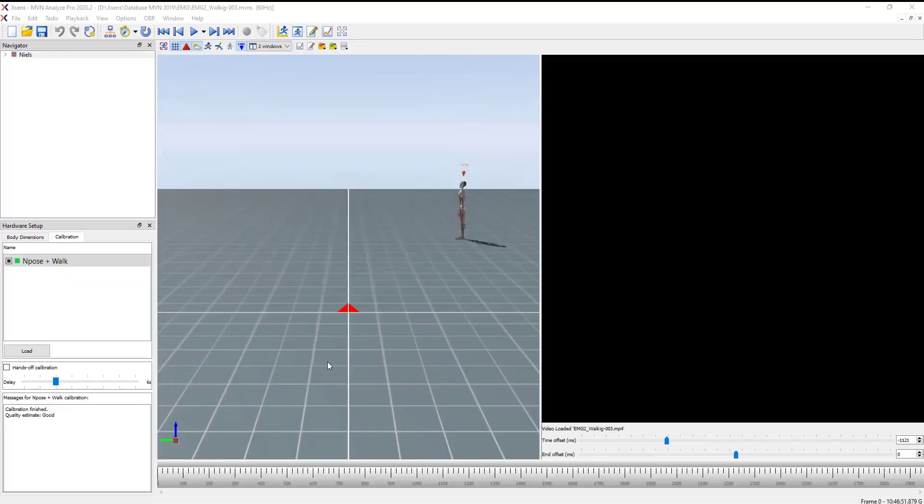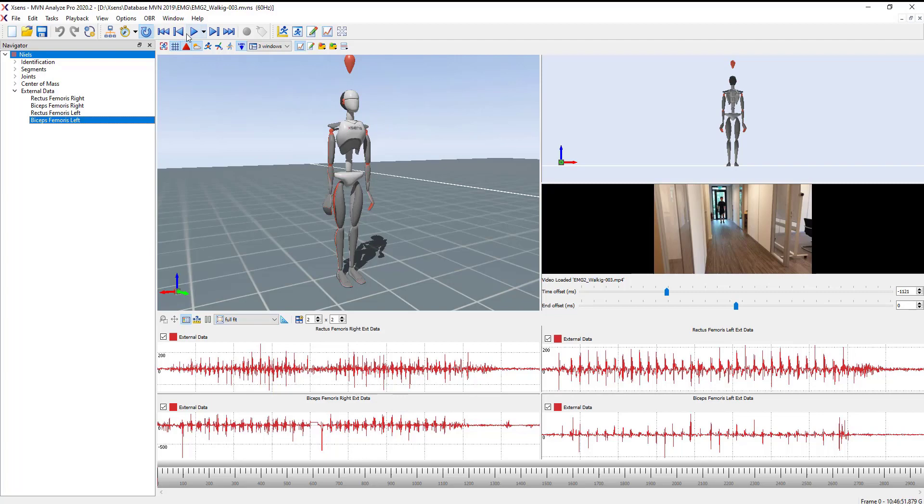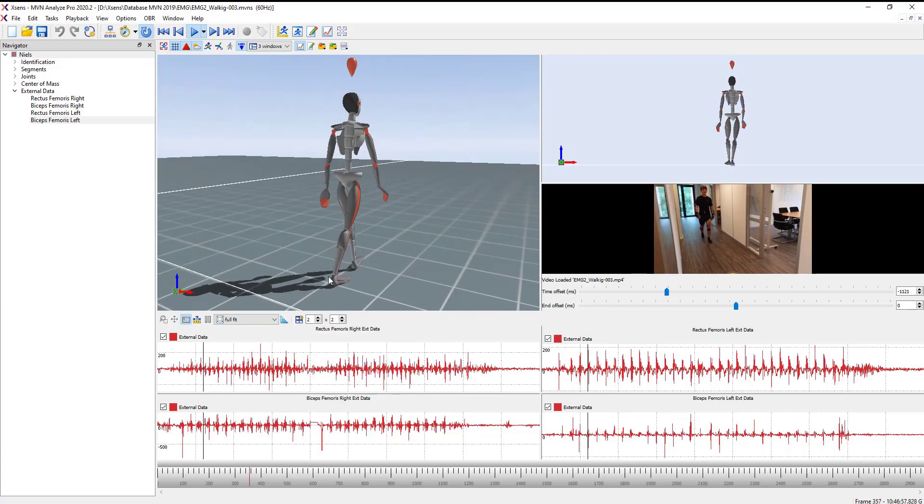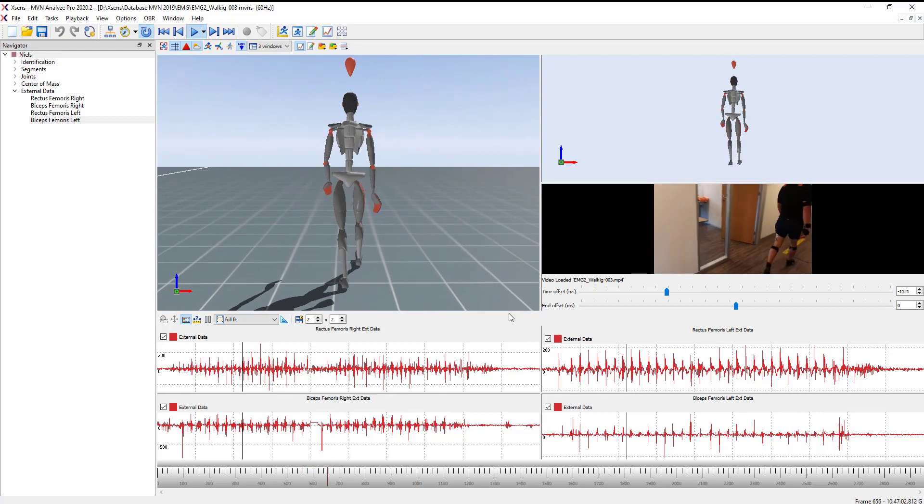Bobbiomechanics is a musculoskeletal modeling software which integrated XSense data to run the model and estimate kinetics parameters of the model. It also supports EMG data that is saved in an MVNX file to then read in Bobbiomechanics.